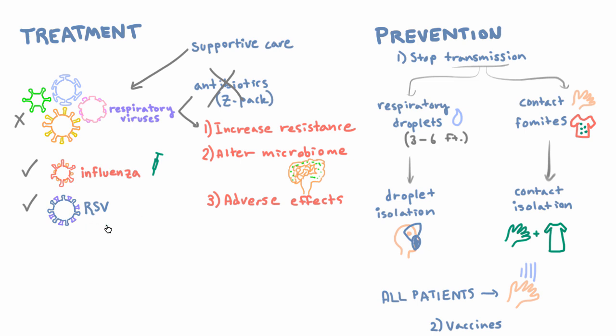For RSV, there's not exactly a vaccine, but what you can do is give little kids a very high dose of antibodies against RSV, which is a way to give them passive immunity — you could call it a passive vaccine. Eventually those antibodies will break down and won't be found in the blood anymore, and then the person won't have any immunity against RSV.